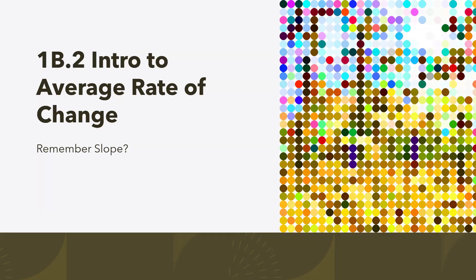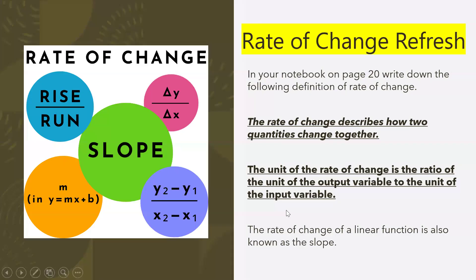We're going to be taking the notes in our handy-dandy notebook. We're on page 20. That's going to be our 1B.2 Intro to Average Rate of Change notes. For short, because of pre-cal, you may call it AROC. That's what it's called in pre-cal, like for shorthand, AROC, Average Rate of Change.